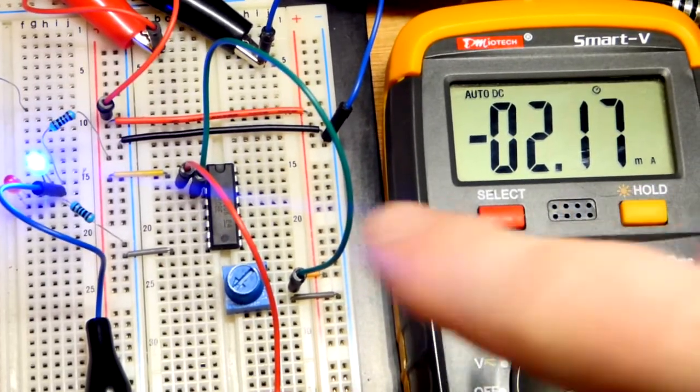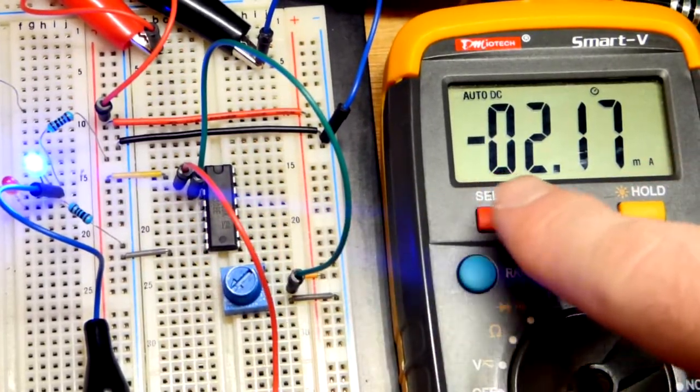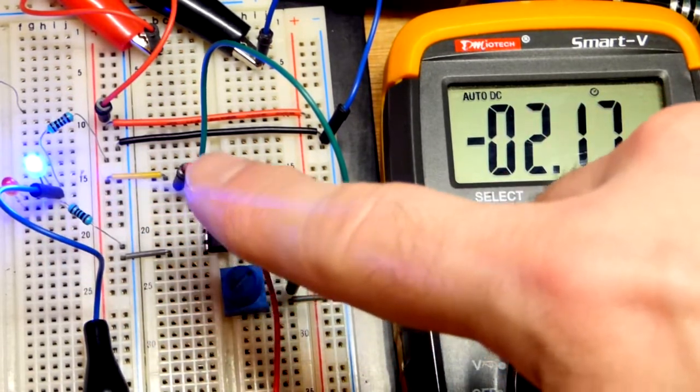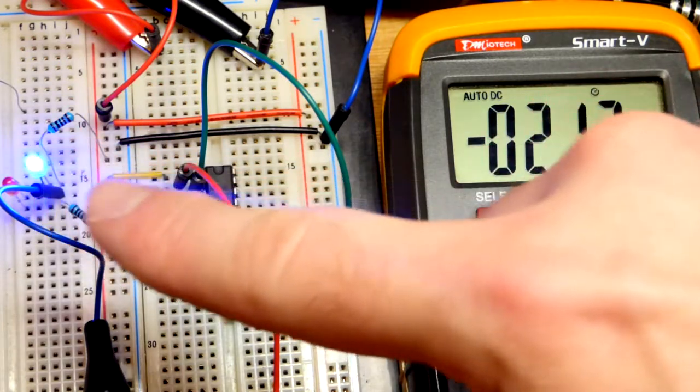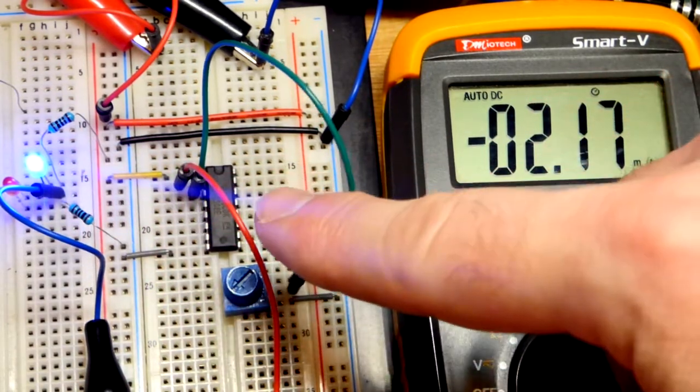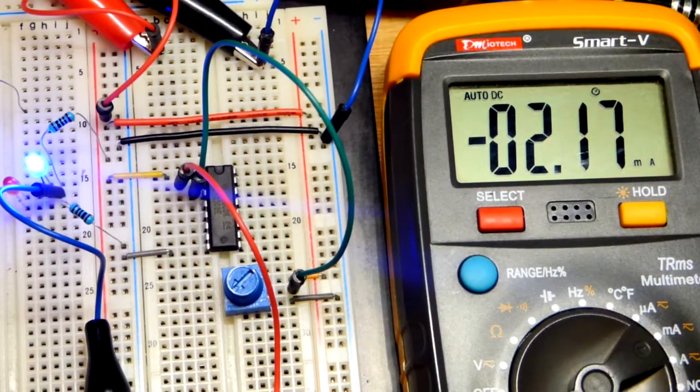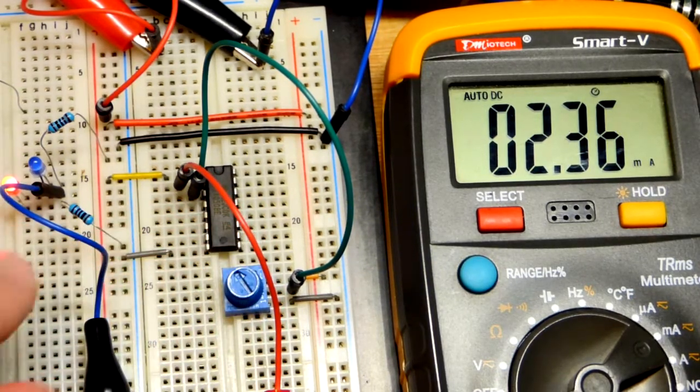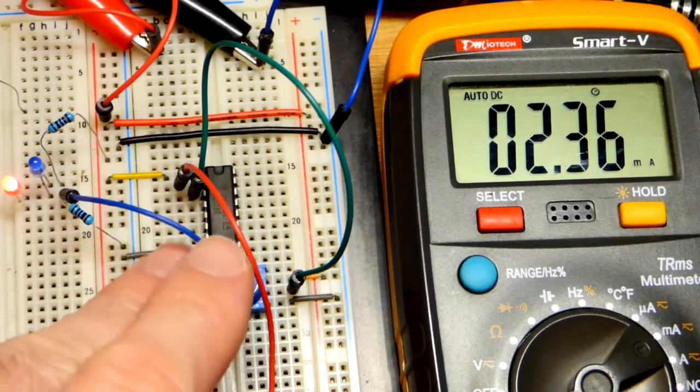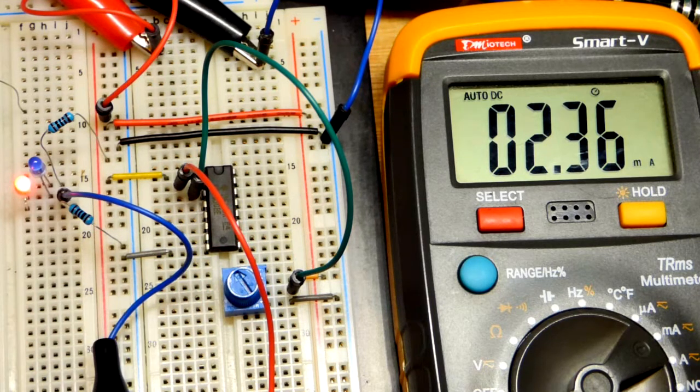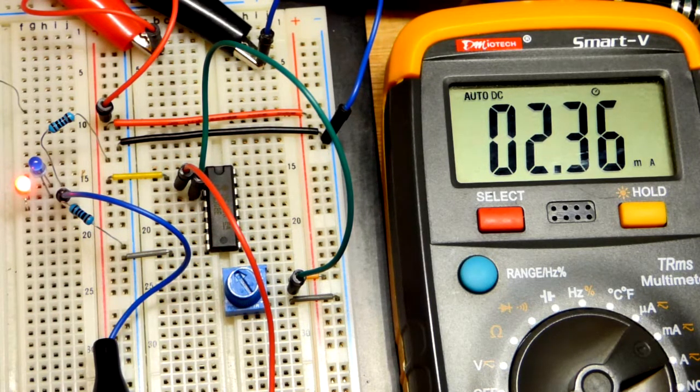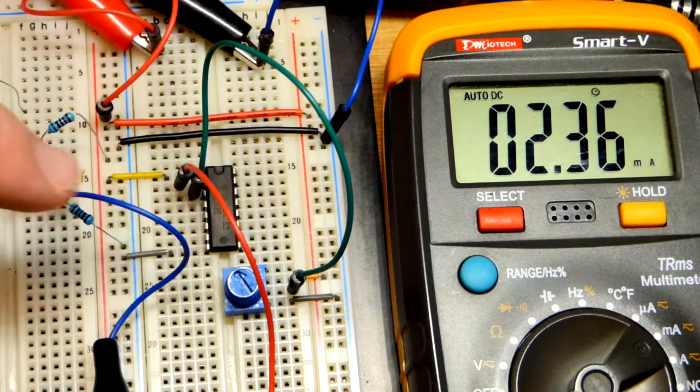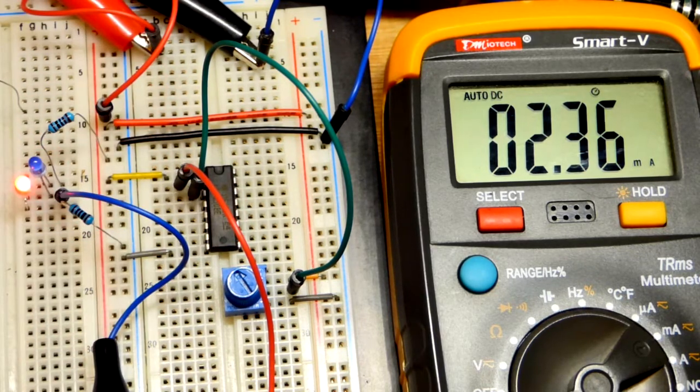Right now, the output, the red probe is more negative than the load there. So we consider current flowing from positive and then sinking into the output. When it is more positive, we got the red there measuring. Now it is sourcing the current as far as the way we look at it.